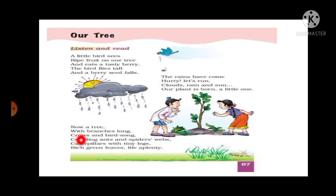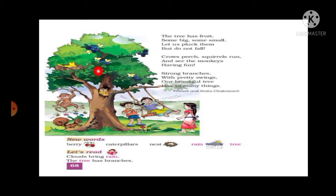A caterpillar is the young one of a butterfly — that is called a caterpillar. 'Rich green leaves — life abundantly.' You can see in the picture of the tree the birds are there, the spider's web is there, and the crawling ants are there. Look at this picture — the ants are there. You can see all these things on the tree.